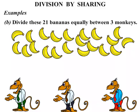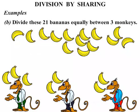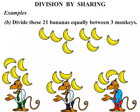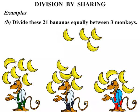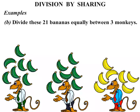So again what we'll do is move the bananas one at a time, distributing all 21 bananas evenly between the 3 monkeys. Let's see how many each get. The first monkey gets 7 bananas. The second monkey also gets 7 bananas. 7 bananas for the third monkey as well. So each monkey gets 7 bananas.